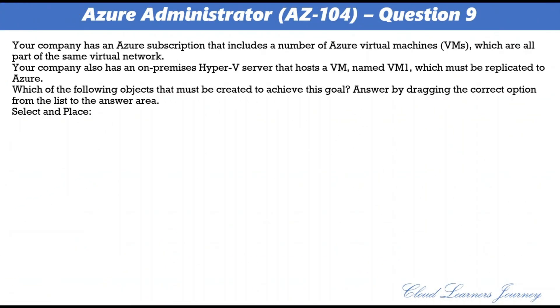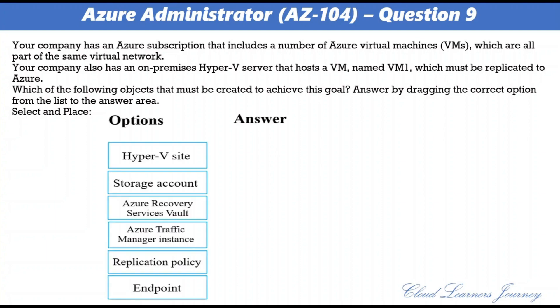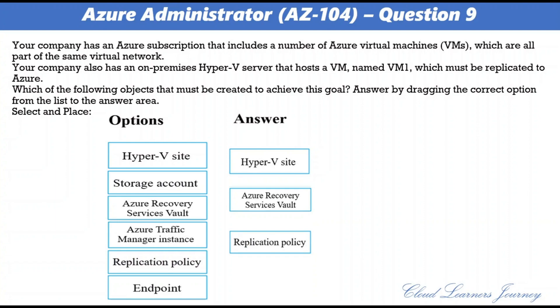Question 9. Your company has an Azure subscription that includes Azure virtual machines, all part of the same virtual network. Your company also has an on-premises Hyper-V server hosting a VM named VM1 that must be replicated to Azure. The correct objects to create are: a Hyper-V site, then an Azure Recovery Services vault, then a replication policy. Note: if the question is about physical servers, the required objects are a storage account, Azure Recovery Services vault, and replication policy.